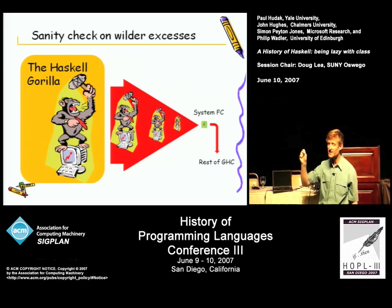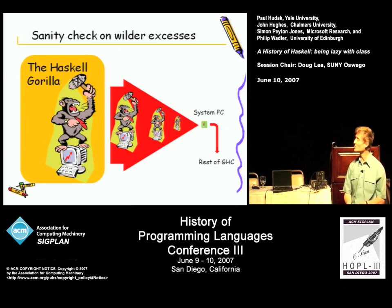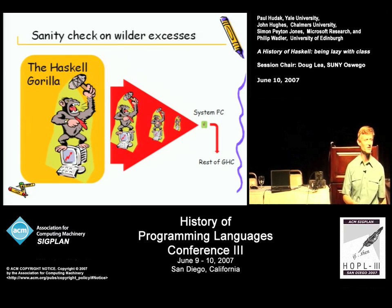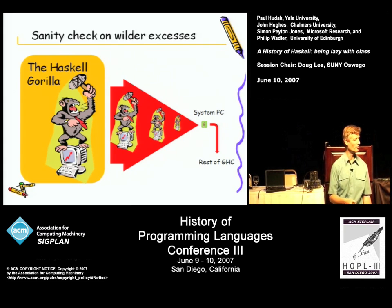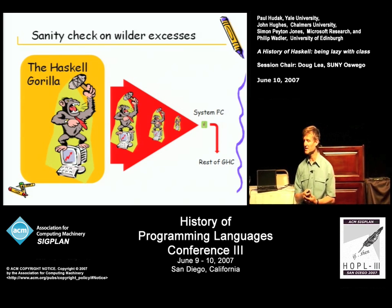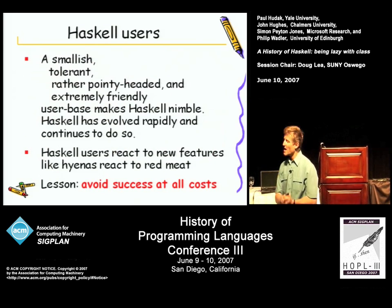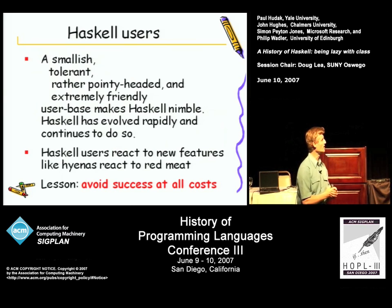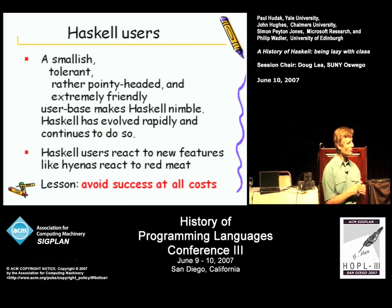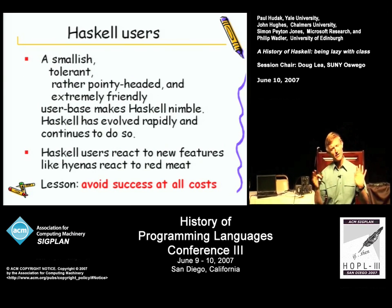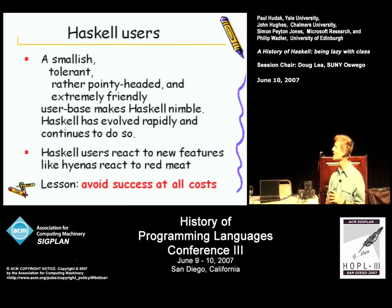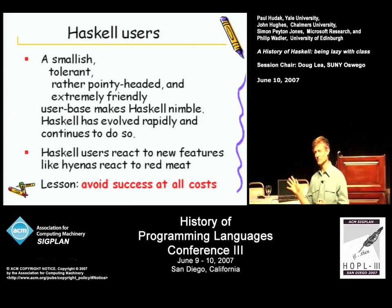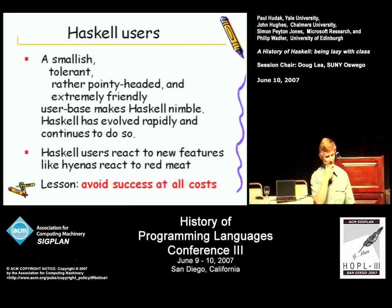GHC has survived with this very small language for 17 years. We were one of the first to use an explicitly typed System F-style intermediate language, and the same one is still doing the job, though we have elaborated it a bit recently to deal with type families. The Haskell users are not a very large group — now thousands, but not millions of people — and they're incredibly tolerant.